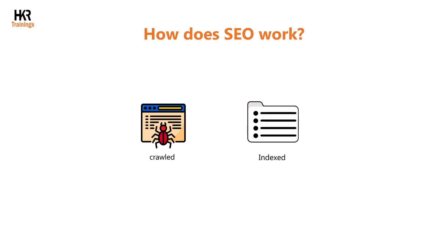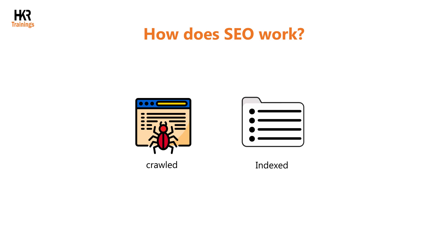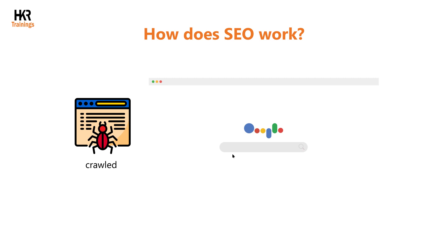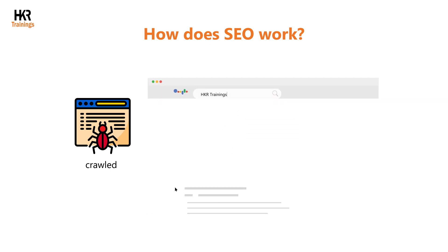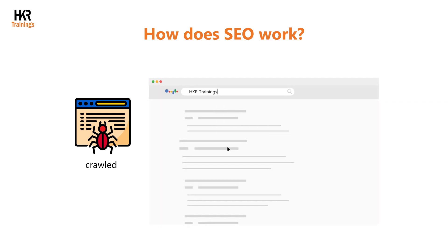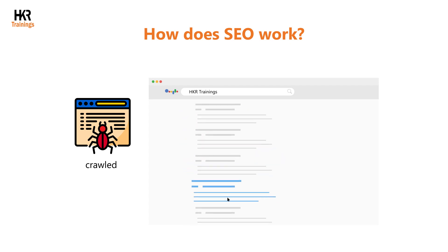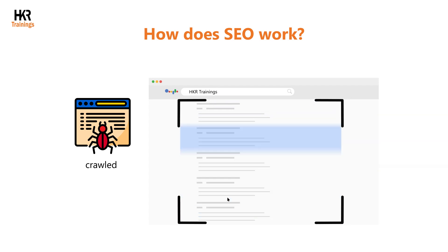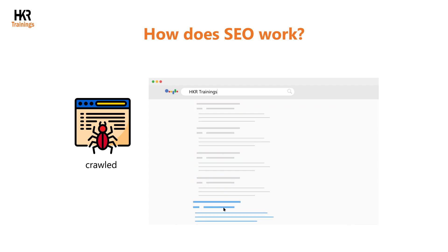Now let's understand how SEO works. Your website must have properly crawled and indexed pages before its pages can appear in search results. Crawlers or spiders are used by each search engine to scour the internet for new web pages. The search engine then adds the pages it discovers to its index, which is a list of all the pages it has crawled. The search engine then scans the pages in its index to find the ones most relevant to the user query.